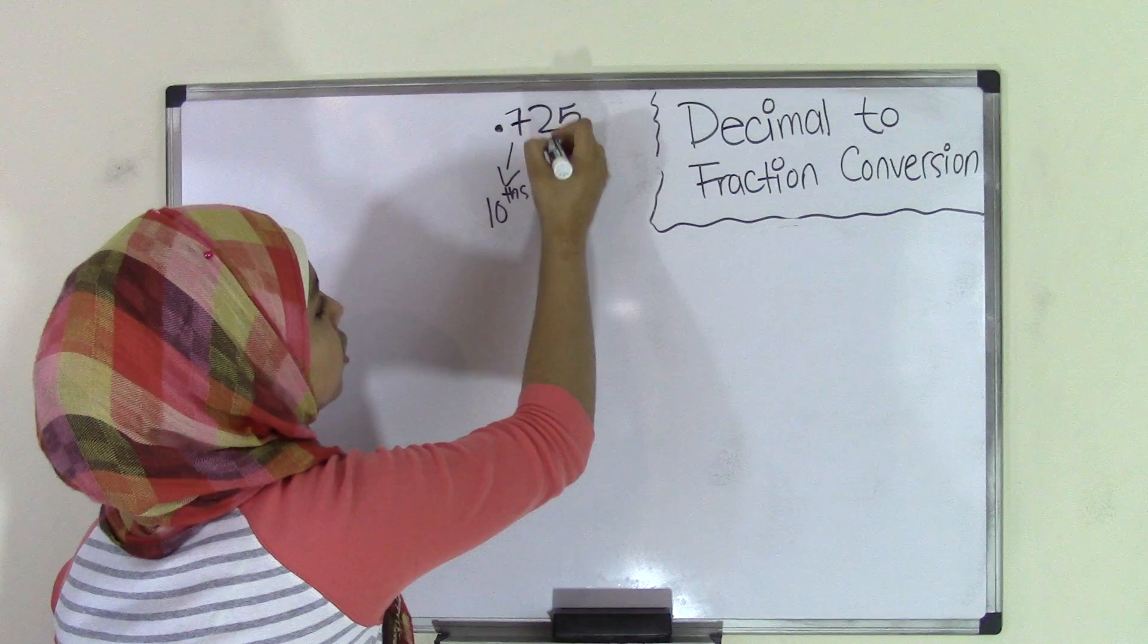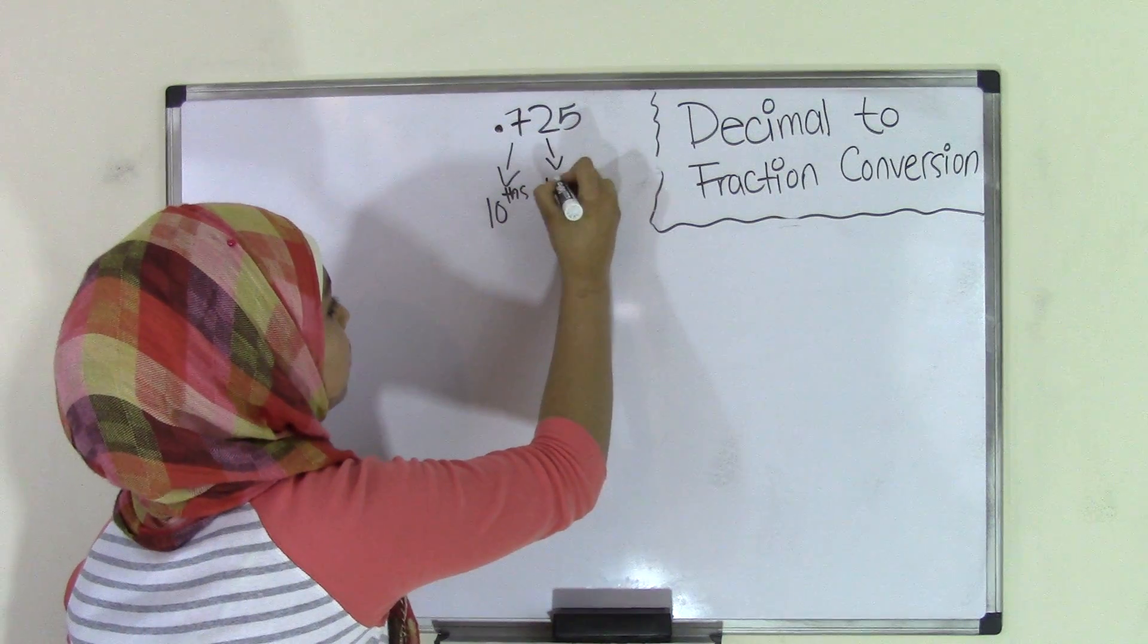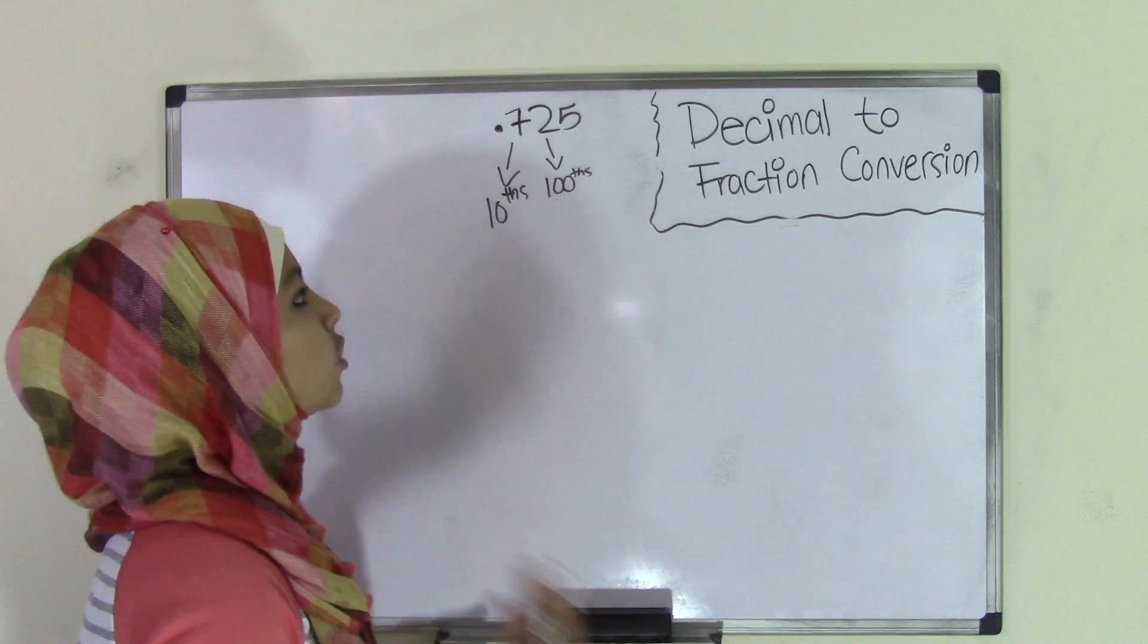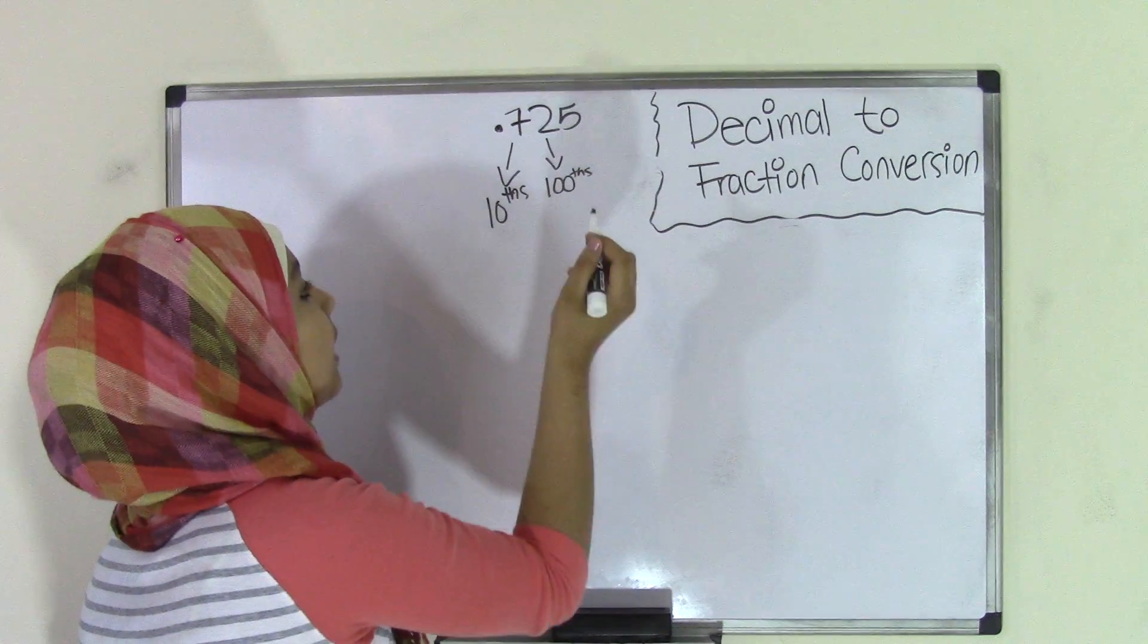Then the second digit, which is 2, is in the hundredths place value. So that means it holds the value of hundredths or also known as 2 over 100.